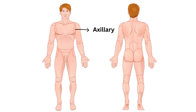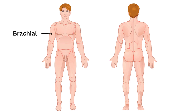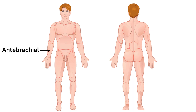4. Thoracic — the chest area. 5. Axillary — the armpit area. 6. Brachial — the upper arm. 7. Antebrachial — the lower arm.